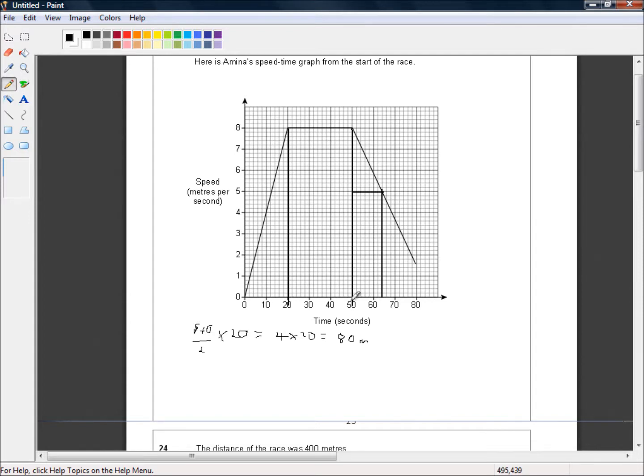So between 20 and 50 seconds she's gone at a steady pace of 8 metres per second. So that's just 8 metres per second times 30 seconds, which is 50 minus 20, which is equal to 8 times 3 is 24. So that's 240 metres.